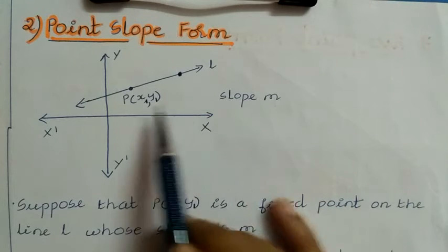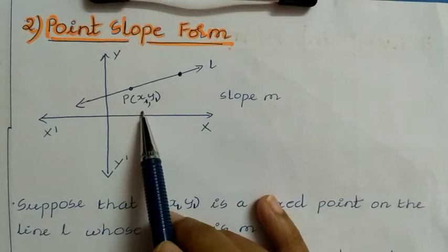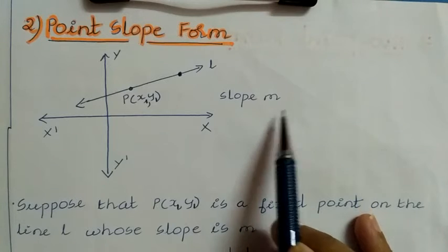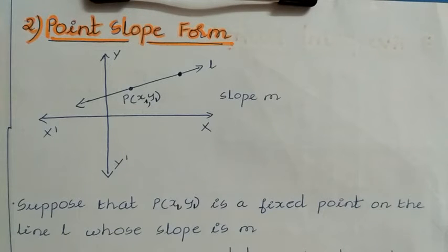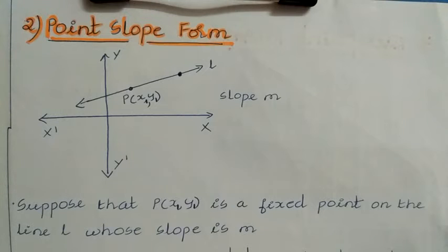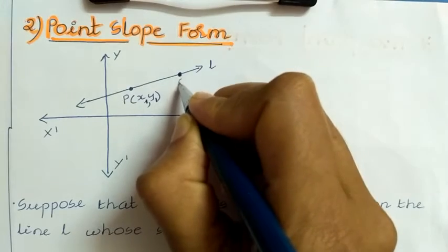So here we know two values: the point with coordinates (x1, y1) and the slope m. We need to find the general equation in point-slope form for the straight line. To do that, let us consider one more point — an arbitrary point on line L. An arbitrary point means the value of the point keeps on changing.